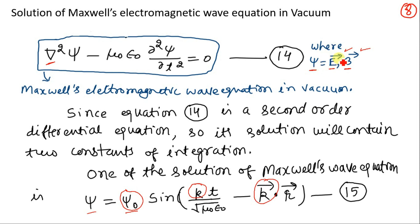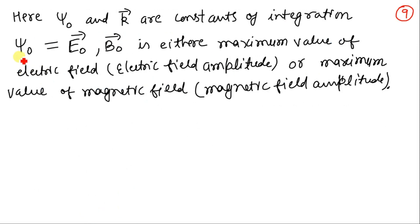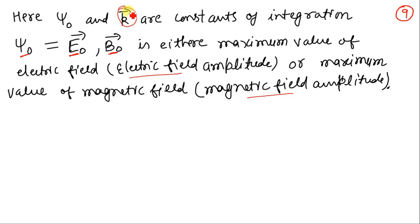Since psi stands for electric field or magnetic field, psi_0 will also stand for electric field or magnetic field, because the sine function itself is unitless. Therefore psi_0 will be the maximum value of electric field or magnetic field — it can be either E₀ or B₀, where E₀ is the maximum value (amplitude) of electric field and B₀ is the maximum value (amplitude) of magnetic field in the electromagnetic wave.